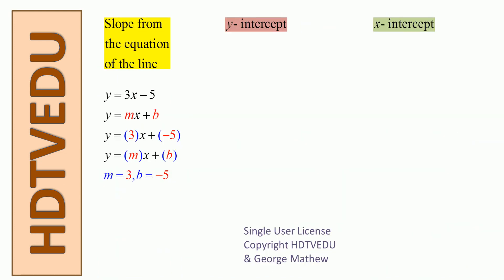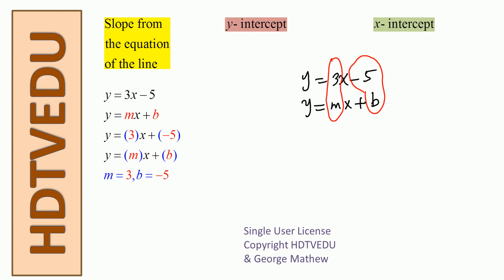How do we get the slope from the equation y is equal to 3x minus 5? Compare it with the standard form y is equal to mx plus b. You can rewrite 3x minus 5 as 3x plus negative 5, which looks just like mx plus b. Now we know m is equal to 3 and b is equal to negative 5.